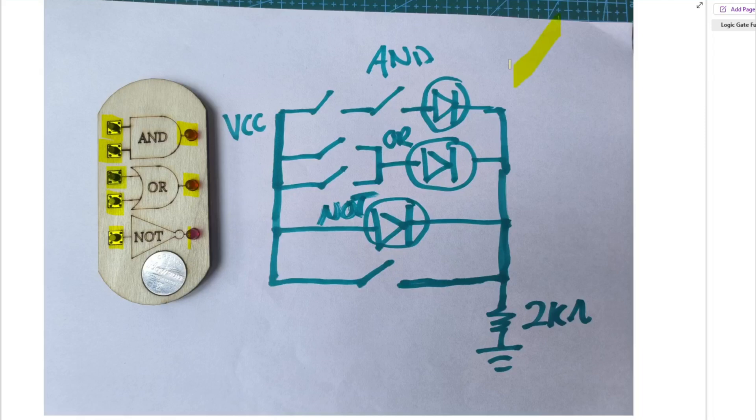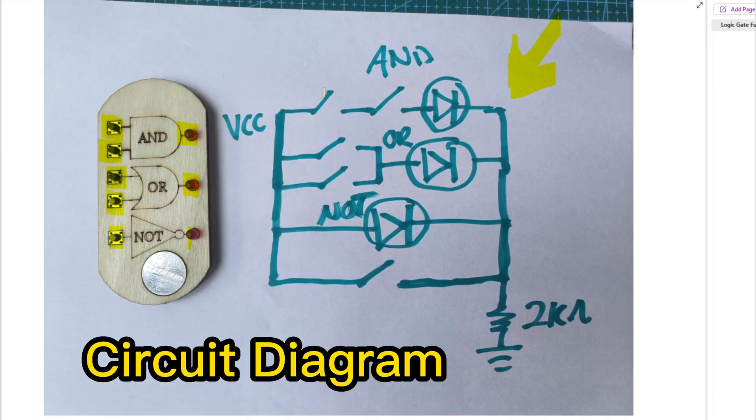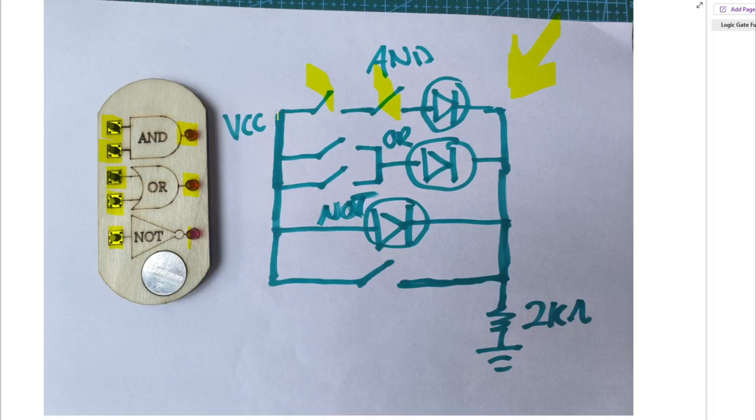And so this is the diagram, the schematic. Basically, to make it simple, I use buttons as switches. So the logic for AND is if both buttons are pushed down, they're in series. If this goes down and this button goes down, it allows the electricity to flow through this LED or they're in parallel. So if one switch goes down, the electricity can flow through here or it can flow through here as well.